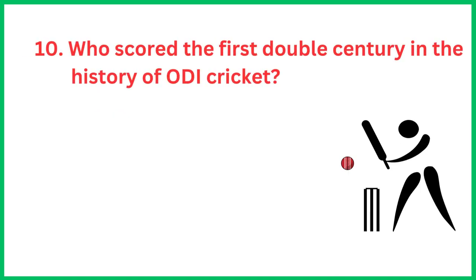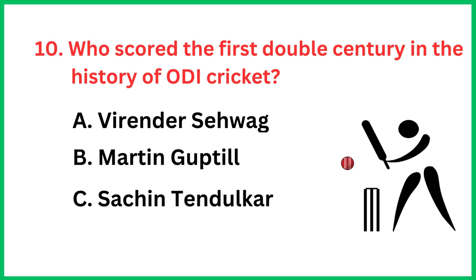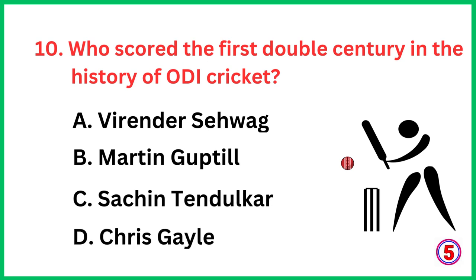Who scored the first double century in the history of ODI cricket? The correct answer is option C: Sachin Tendulkar.